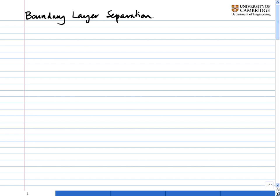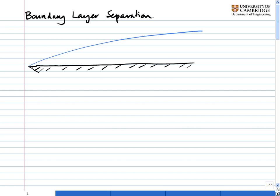Boundary layer separation has one of the most profound implications for aerodynamics, which is why it's so important. Let's start by considering a boundary layer growing over a flat plate. The first important fact is that the change in pressure in the y-direction, dp/dy, of the pressure field, which is a function of x and y — taking the origin at the front of the plate — is very, very small. So it's approximately equal to zero.